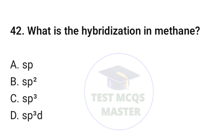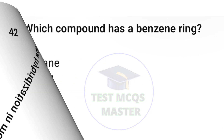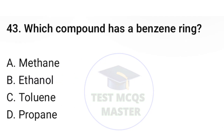Question number forty-two: what is the hybridization in methane? The correct option is C, sp3. Question number forty-three: which compound has a benzene ring? The correct option is C, toluene.